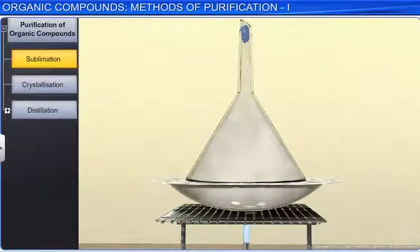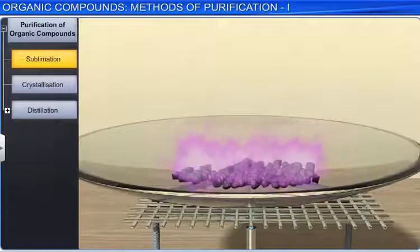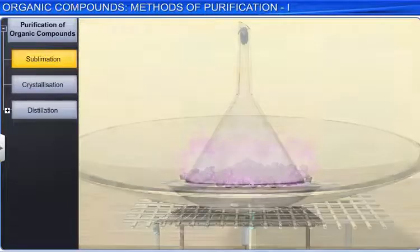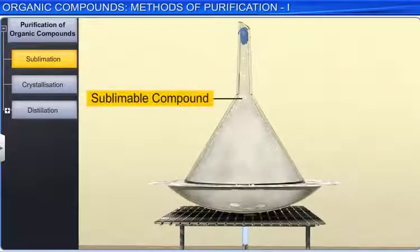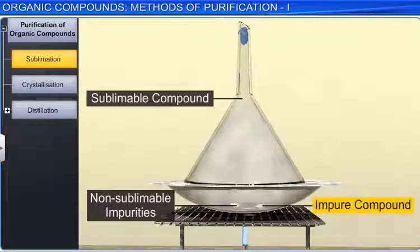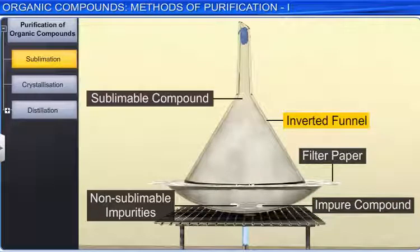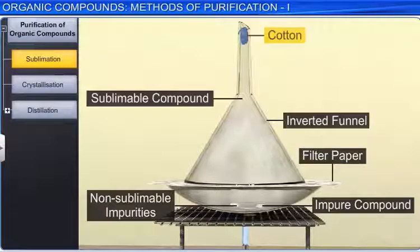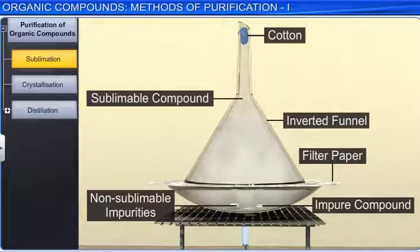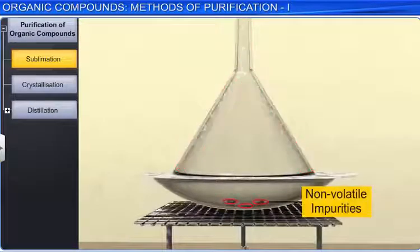Sublimation technique is used to purify sublimable solid organic compounds. Sublimation is a process which involves the conversion of a solid directly into vapor without any intermediate liquid state. This process is used for separating sublimable compounds from non-sublimable impurities. The impure substance is heated in a dish covered with a perforated filter paper over which an inverted funnel is placed. The stem of the funnel is plugged with a little cotton. Vapors of the solid which sublime pass through the holes in the filter paper and condense on the cooler walls of the funnel. The non-volatile impurities are left behind in the dish.